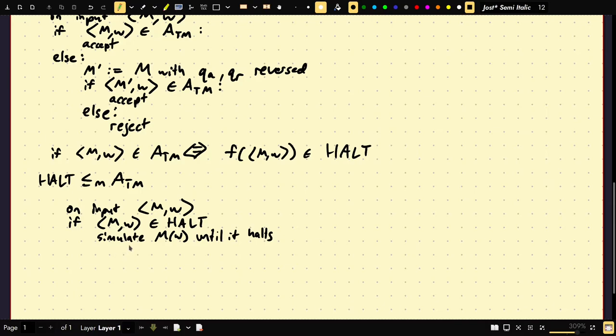And it has to halt because it's in HALT. Return, we'll say, accept if M, W accepts. Reject if M on W rejects. And if M, W, for example, was not in HALT, then we know it has to loop forever, so it cannot accept. So, we can immediately just say reject.